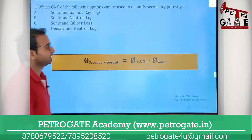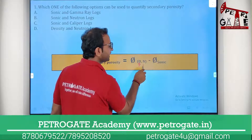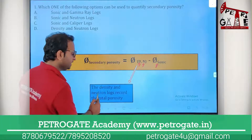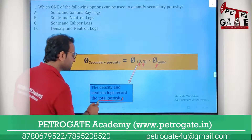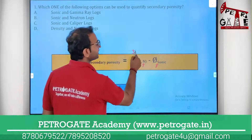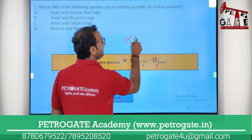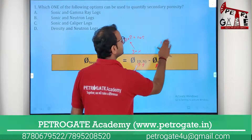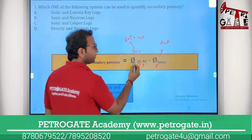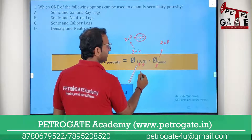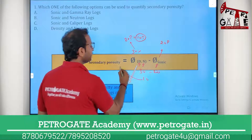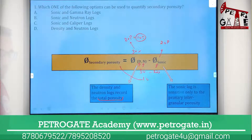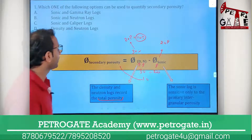So: secondary porosity = density log porosity (or neutron log porosity) minus sonic log porosity. For example, if total porosity is 30% — with 20% primary and 10% secondary — sonic measures only the 20% primary. So 30 minus 20 gives you 10% secondary porosity. Sonic log is sensitive only to primary intergranular porosity.